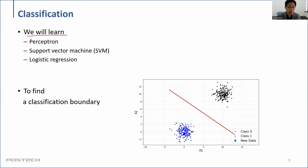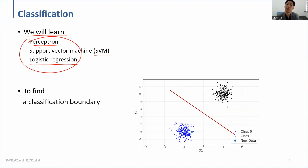We're going to learn about perceptrons and support vector machines — we call it SVM. And the last method is logistic regression. So these are the topics I'm going to cover in these lectures under classification topics.